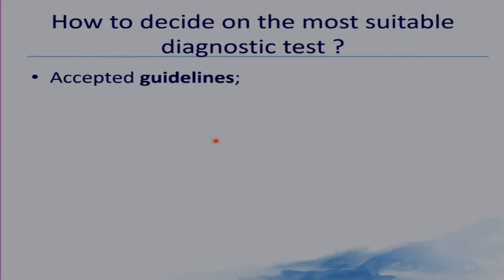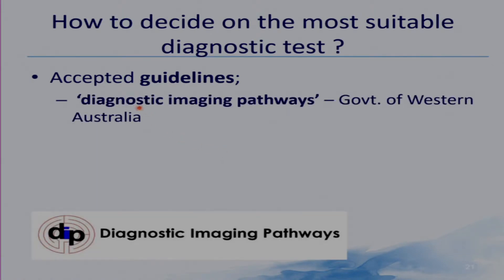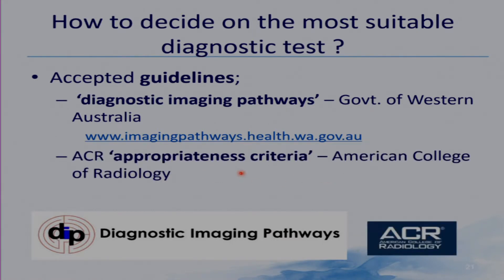How do we decide on the most suitable diagnostic test? It may be tricky as there are various factors to consider. Fortunately, there are accepted guidelines. For example, Diagnostic Imaging Pathways, developed by the Government of Western Australia, is available on their website. The ACR is the American College of Radiology Appropriateness Criteria, also available online. The Diagnostic Imaging Pathways is a very useful site providing imaging pathways for many clinical scenarios and is available for free.